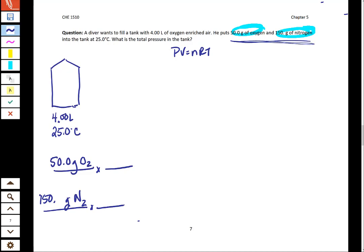Remember these are diatomic gases and so 32 grams of oxygen is equivalent to one mole of oxygen and 28.02 grams of nitrogen is equivalent to one mole of nitrogen.